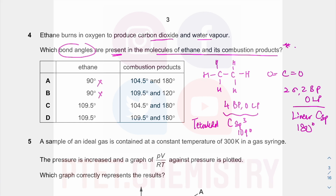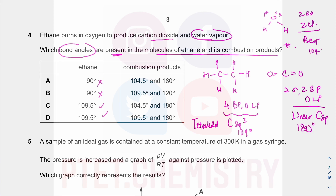Some weaker students think ethane's bond angle is 90 degrees without thinking about hybridization or VSEPR theory, which A-level students are expected to apply. The combustion product CO2 has a 180-degree bond angle. Water vapor has two bond pairs and two lone pairs, giving a bent shape with a bond angle of 104.5 degrees. So the combustion products give 180 degrees for CO2 and 104.5 degrees for water.